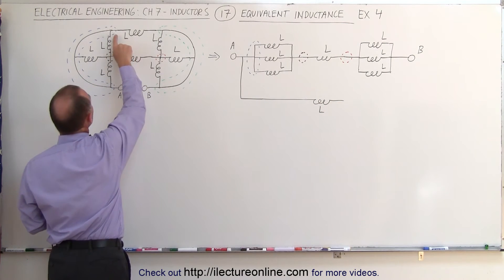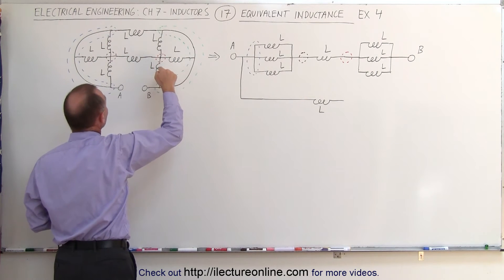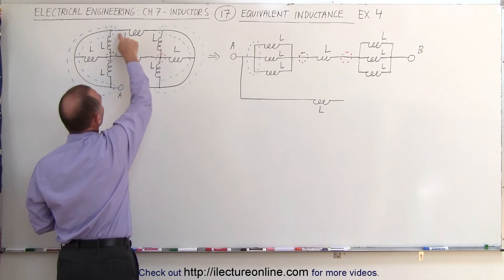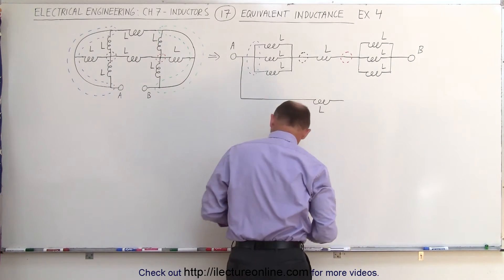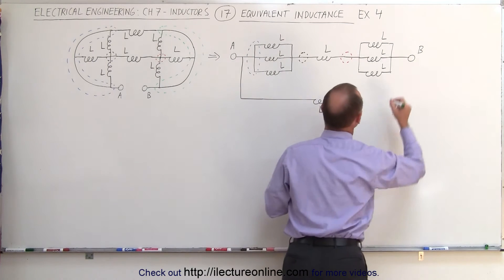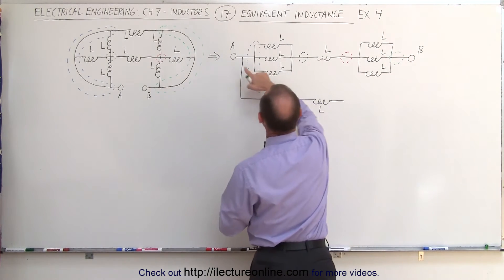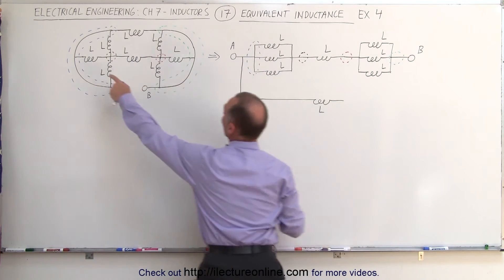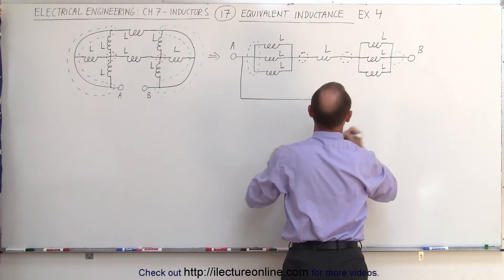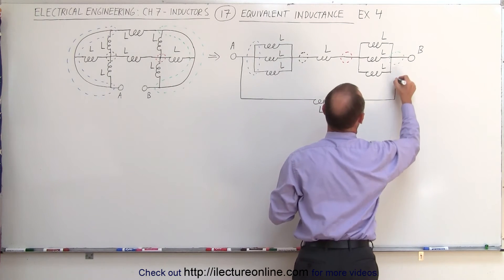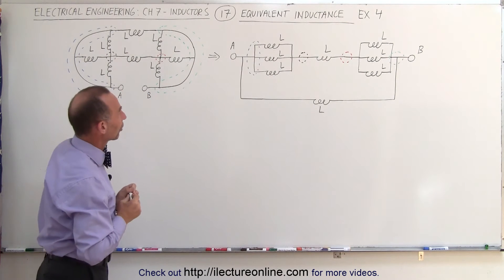Well, notice that from the blue branch point, I can get to the green branch point by going through this single inductor right here — we can go from the blue to the green. Here's the green one. We can go from the blue to the green through a single inductor L right here. And now we have a complete equivalent circuit.